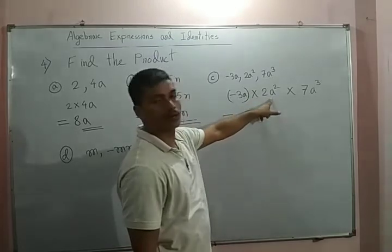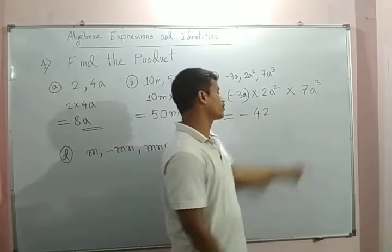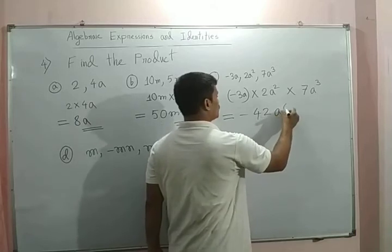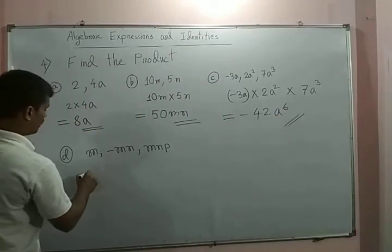For the variables, a into a square is a to the power 3, a to the power 3 into a to the power 3 is a to the power 6.